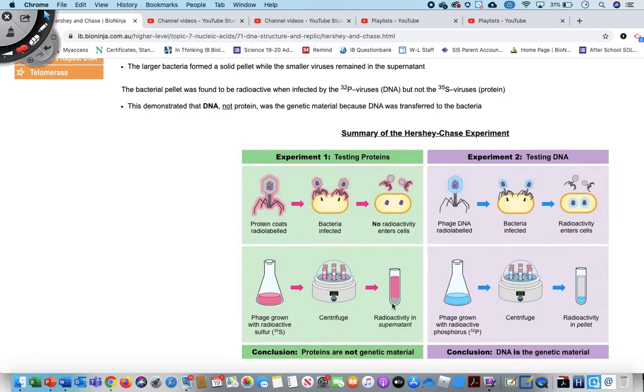The pellet right here at the bottom, the pellet was not radioactive. And the pellet actually had the bacteria because that was of a denser structure. So they found the radioactivity in the supernatant, which means that only the virus remained radioactive and not the bacteria. So that means that whatever the virus had injected into the bacteria, it was not the genetic material. So the conclusion was that proteins are not the genetic material.